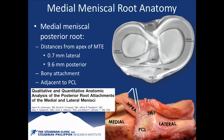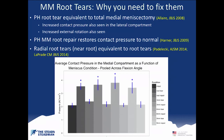To understand root tears we have to look at the anatomy — something we published on in AJSM a few years ago. The medial meniscus root attaches about a centimeter posterior to the apex of the medial tibial eminence, and it's really adjacent to the PCL. We need to fix them because Chris Harner's group showed that it's equivalent to a total medial meniscectomy due to increased contact forces. They also saw increased external rotation.